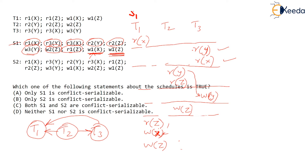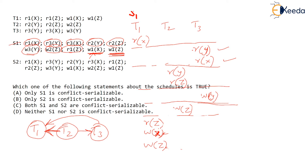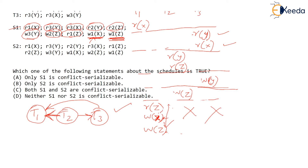After read Z, write Y of T3 executes and doesn't conflict with any remaining line — no other transaction is reading or writing Y. T3 is now finished. Write Z of T2 would conflict with read Z and write Z of T1, but the T2-to-T1 edge is already shown. T2 is also done, and only T1 remains with nothing left in T2 or T3 to conflict with.